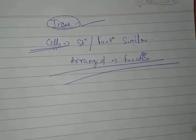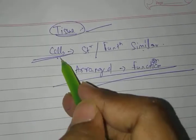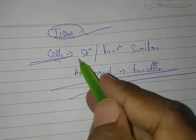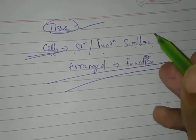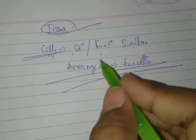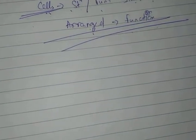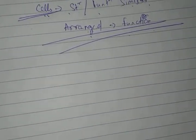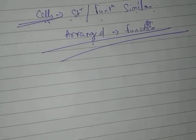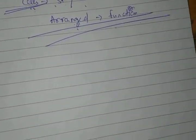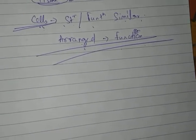Clear? So tissues are a group of cells which are structurally and functionally similar and they are arranged and designed in a proper manner to perform specific function. Many cells whose structure and function are the same, if they are connected together and used in a proper manner to perform a specific function, we call them tissues.